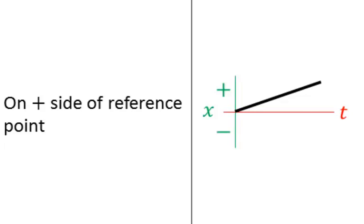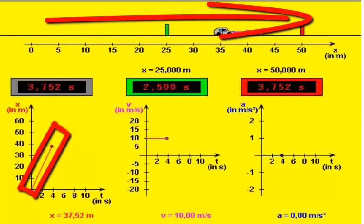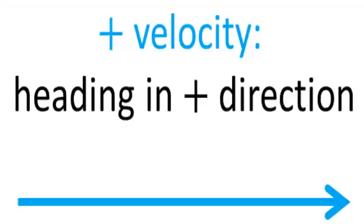And so the position is always positive, and because it's always heading to the positive direction, the slope, the gradient, is also always positive. The velocity is always positive.